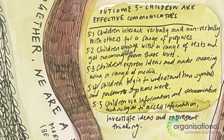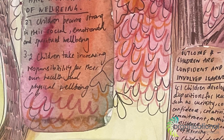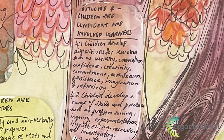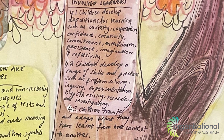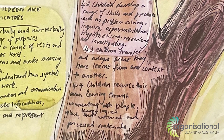And then outcome three, children have a strong sense of wellbeing, and she's put that up in the colours of the leaves. You can tell whether a forest is healthy just by looking at the colours of the leaves. Outcome four is children are confident and involved learners — what could be more appropriate than the trunk of a tree, a solid growth, something that is confident and standing its place in a forest.